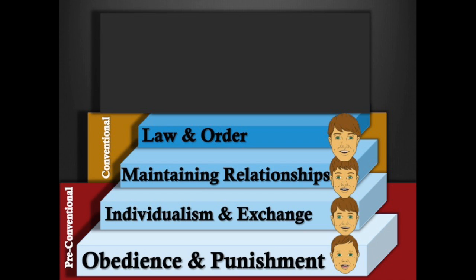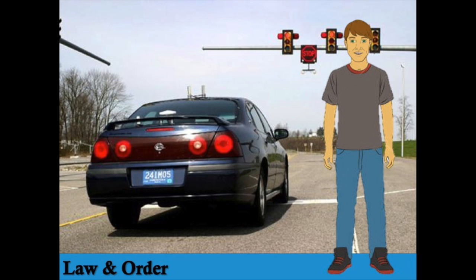Stage four: law and order. The individual is determined to obey the rules, focusing on the value that the law adds to human life. A person at this stage might argue that breaking the law is wrong because the law is designed to protect people. Individuals in stage four focus on maintaining the social order and upholding cultural norms. Bobby is waiting at a red light that takes a long time to change and he's running late for class. There's no observable traffic in either direction for miles. Bobby decides to do the right thing, wait for the light to turn green, and accepts that he will be late to class.